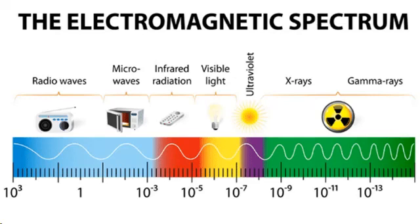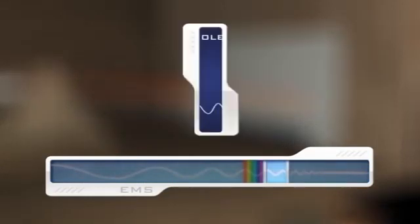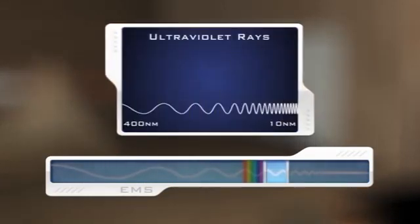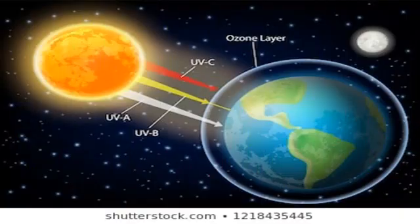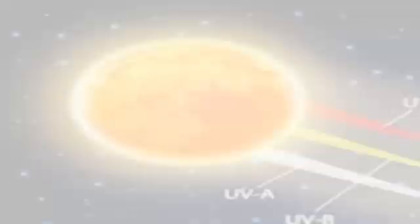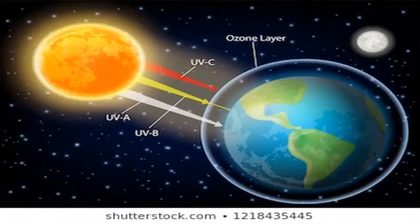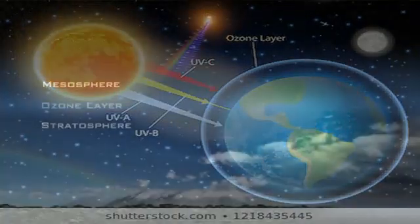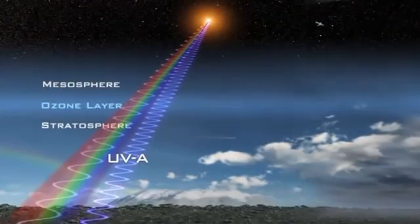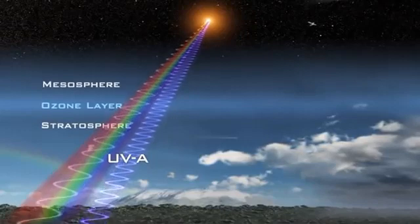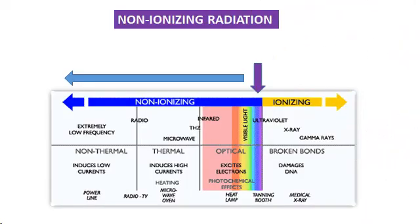Ultraviolet is an electromagnetic radiation with the wavelength shorter than that of visible light, but longer than X-rays. It is named as such because the spectrum consists of electromagnetic waves with frequencies higher than those that humans identify as the color violet. Ultraviolet radiation is produced by high-temperature surfaces such as the sun. Most of the ultraviolet radiation in sunlight is absorbed by oxygen in Earth's atmosphere, which forms the ozone layer of the lower stratosphere.